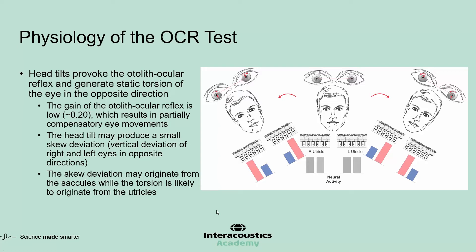The movements that you just saw provoked the otolith-ocular reflex, which causes compensatory eye movements by generating static torsion of the eyes in the opposite direction. Unlike the VOR, the gain of otolith-ocular reflexes is only about 0.2, which means the eye movements are not fully compensatory. The head tilt may also generate a small vertical skewed deviation, which shows up as the ipsilateral eye moving upward and the contralateral eye moving downward.